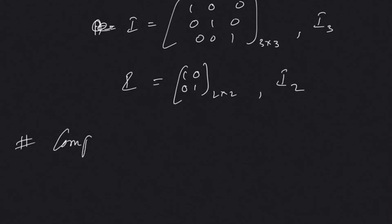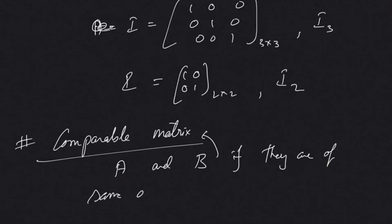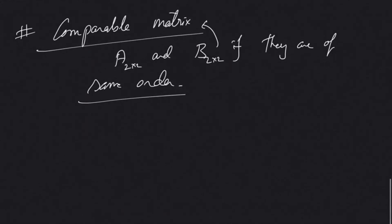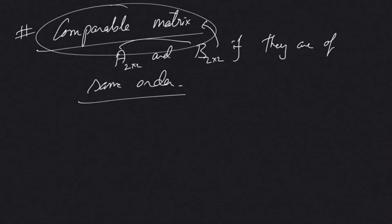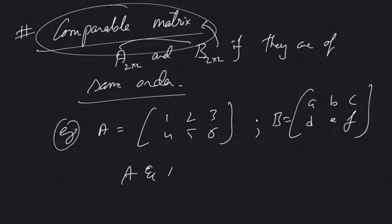Next we have comparable matrices. If we assume two matrices A and B, they are said to be comparable if they are of the same order — if A is 2 by 2 then B should also be 2 by 2, and so on. For example, matrix A with elements 1, 2, 3, 4, 5, 6 and matrix B with elements a, b, c, d, e, f — A and B are not equal but are comparable matrices.